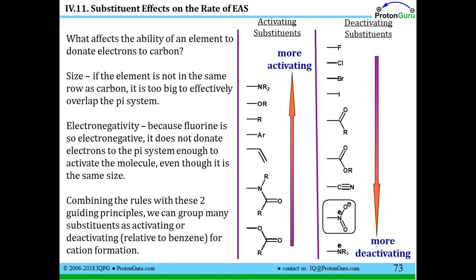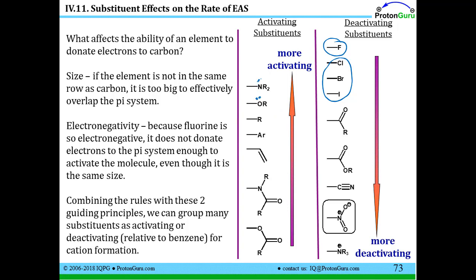We can analyze a large list of potential substituents on benzene by considering two factors: size and electronegativity. If the element is not in the same row as carbon, it's too big to effectively overlap the pi system and can't engage in resonance. Electronegativity matters too — fluorine is very electronegative and won't activate the ring. Comparing N vs. O: both are the same size and in the same row as carbon, but nitrogen is less electronegative, so it donates electrons more easily to a carbocation — making it more activating than oxygen.